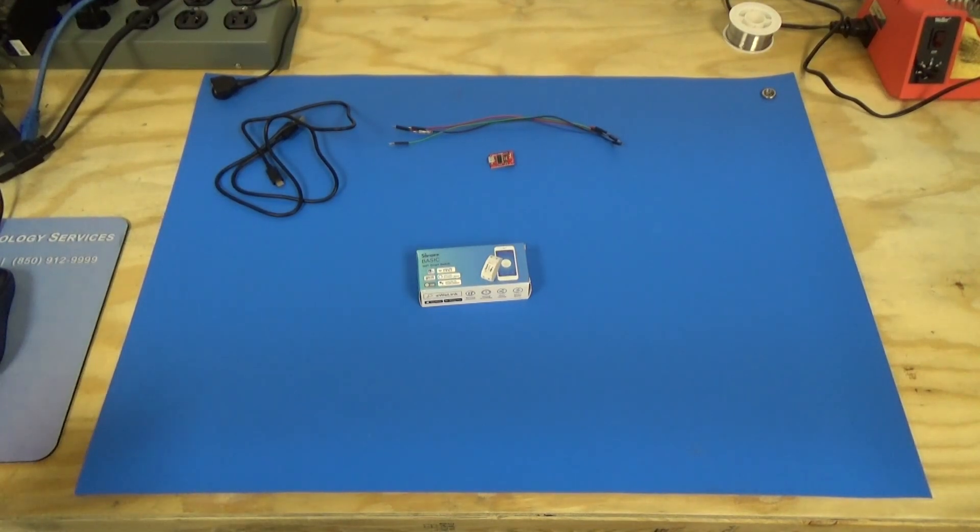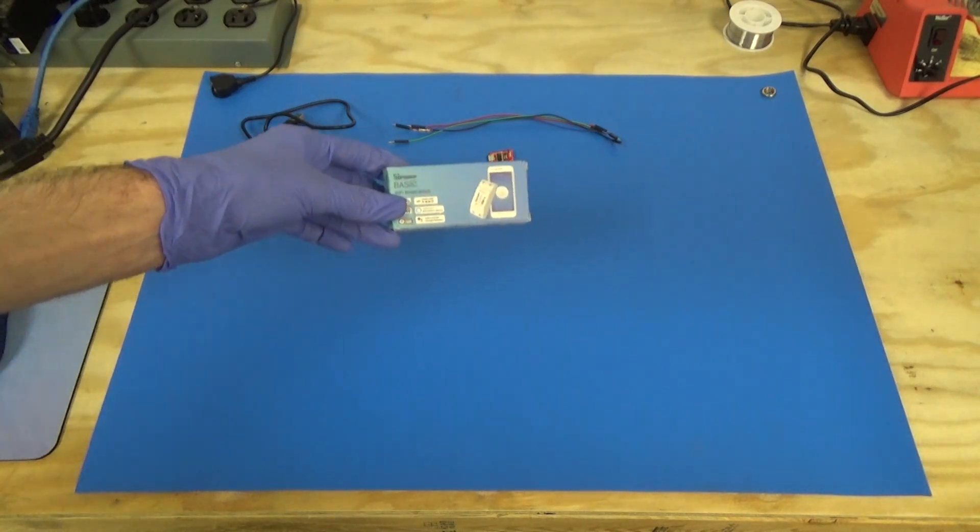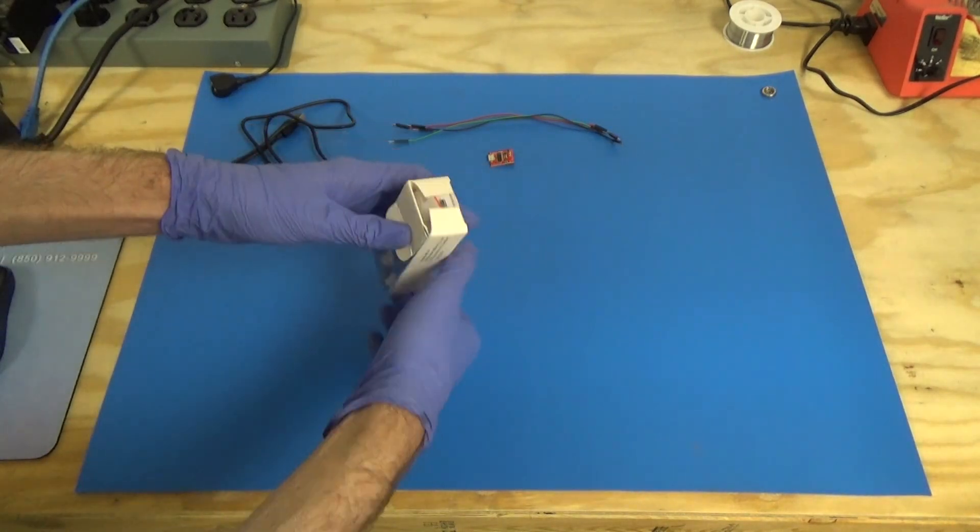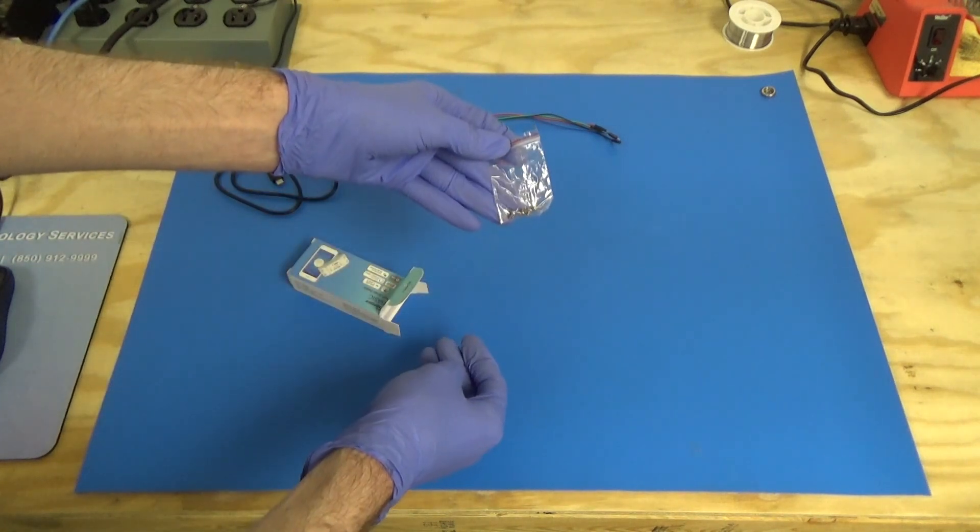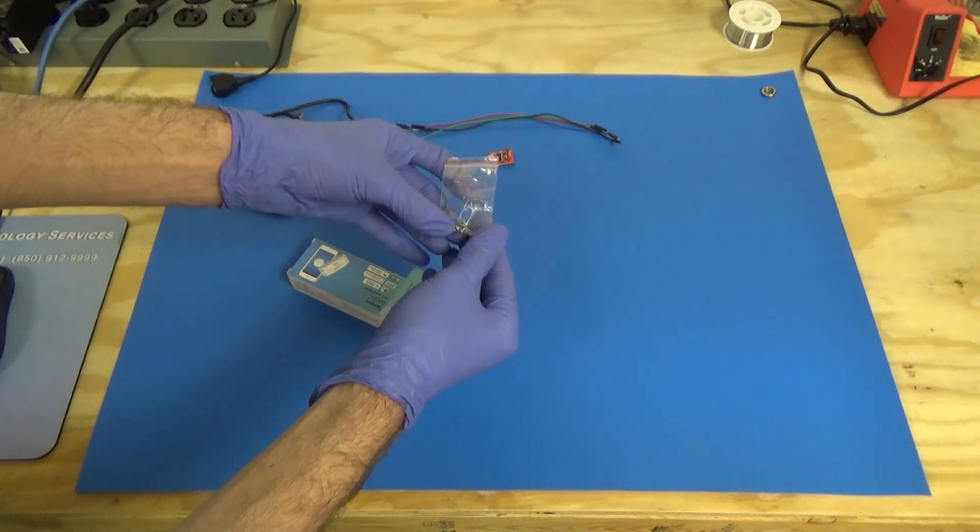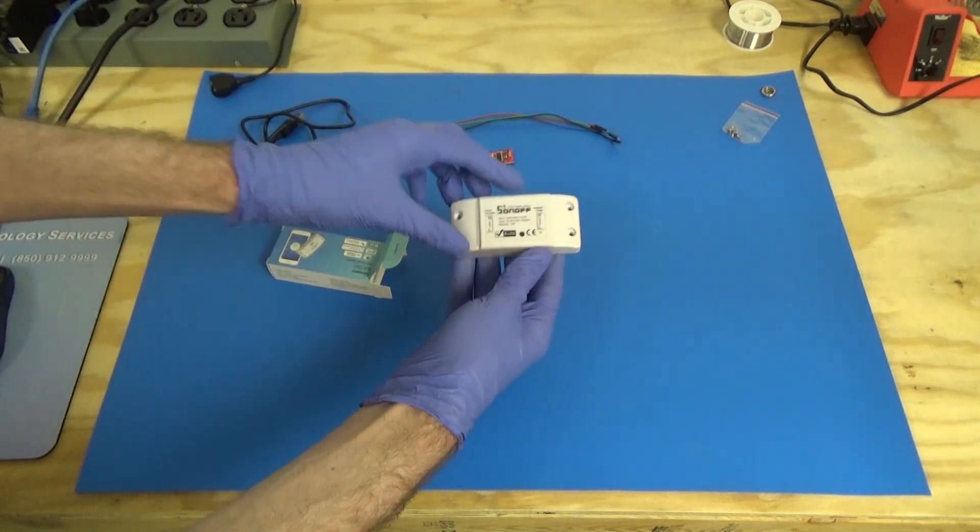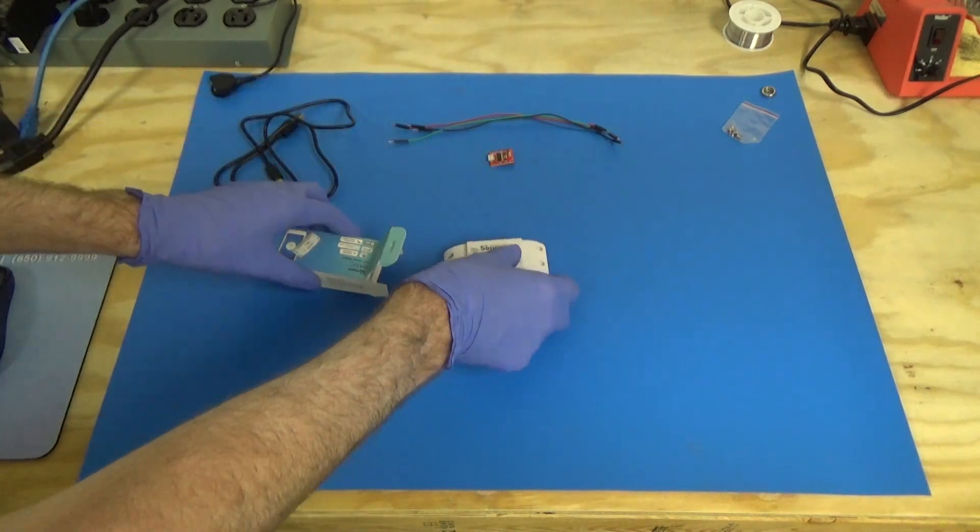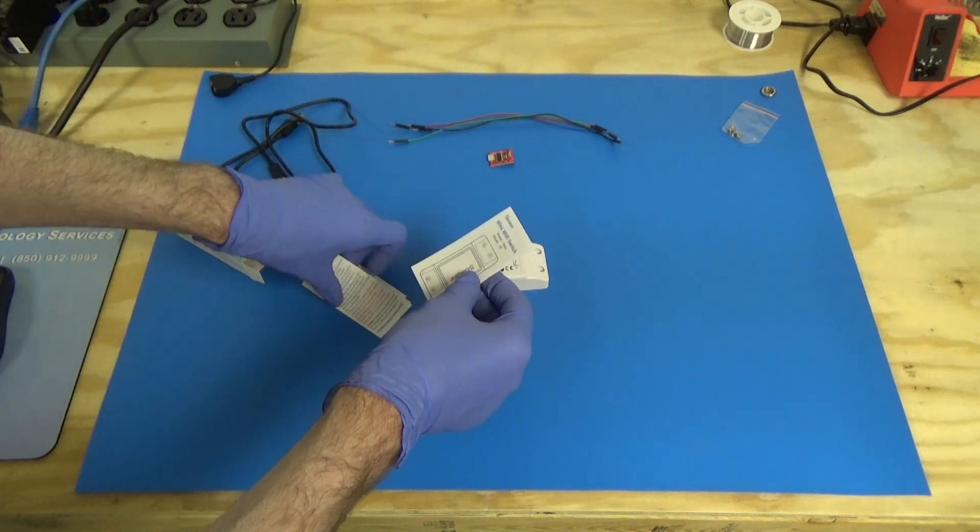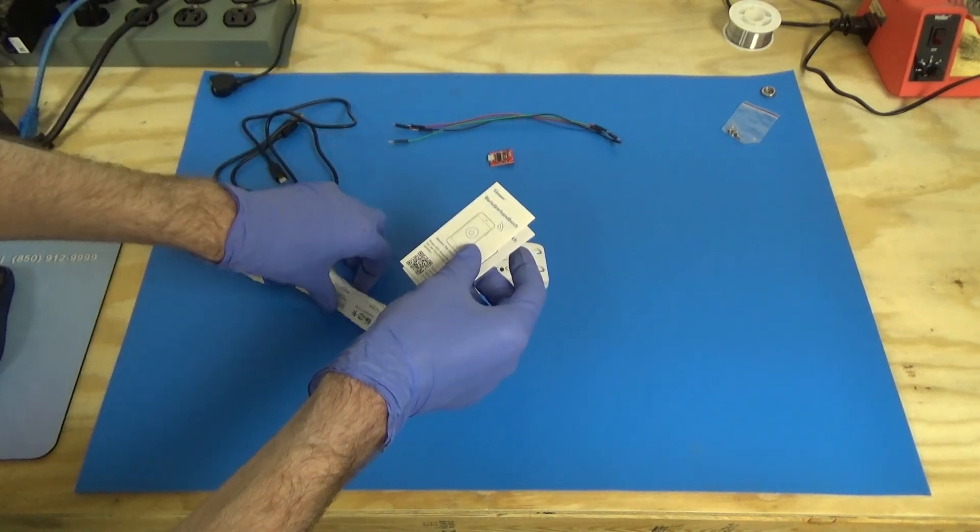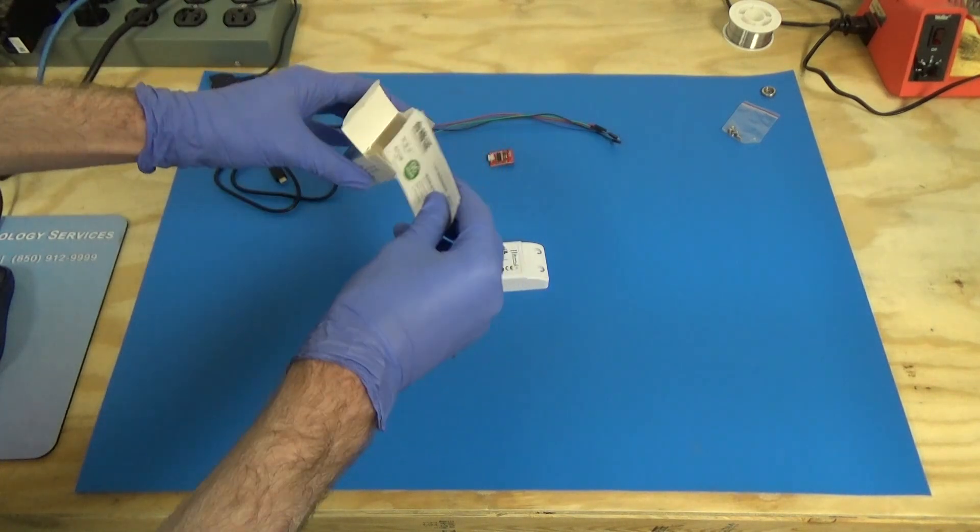Okay so let's go over our required materials. First we have the actual Sonoff device. So we'll go over what comes in the box. We have a pack of screws so we will need those. We'll go ahead and put those off to the side. We have the actual Sonoff and then it comes with some documentation which in this case we're not actually going to need.